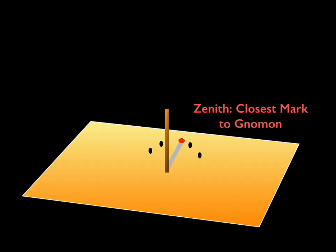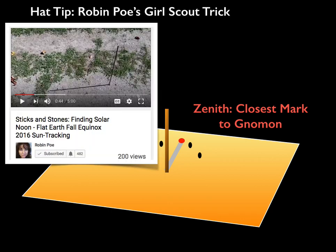Here's an interesting tidbit: the zenith is going to be the closest mark to the gnomon. This was pointed out by Robin Poe in her video, 'Sticks and Stones, Finding Solar Noon,' where she had a shadow stick and was marking the shadows with pebbles.